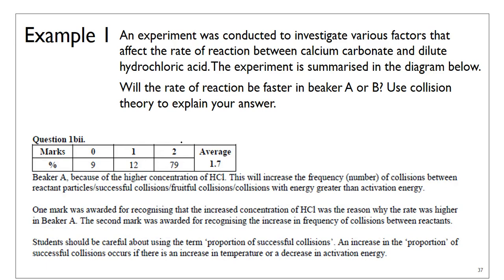One mark for saying Beaker A because there is a higher concentration of HCl, and the second mark for saying this will increase the frequency of collision. For a two-mark question you don't need to mention correct orientation, but for a three-mark question you would. Just avoid using the wording 'proportion of successful collision' — simply say 'increase frequency of collision' for the second mark.